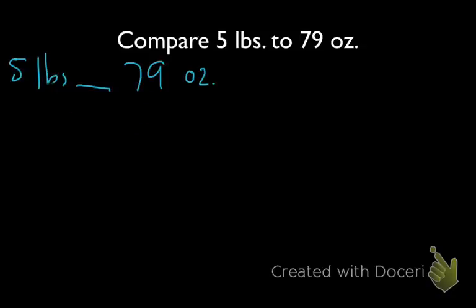If I'm changing from a larger unit to a smaller unit, I'm going to have to multiply. Multiplying is going to be easier since there are 16 ounces in a pound. Multiplying 5 by 16 is going to be easier than dividing 79 by 16.